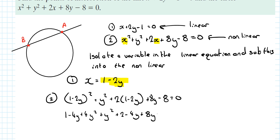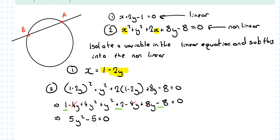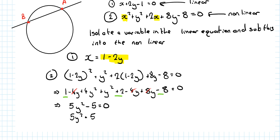Plus 8y − 8 = 0. We're happy at this point because now there is only one variable, y. Collecting terms: 5y² − 5 = 0. You might get a longer quadratic with a, b, and c — you just solve that in the normal way.